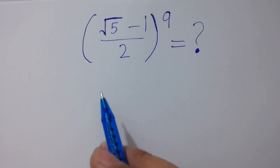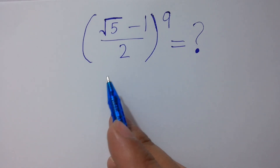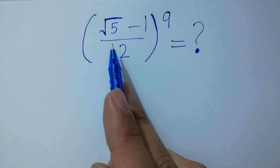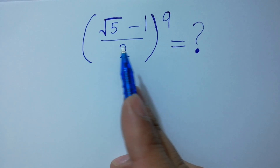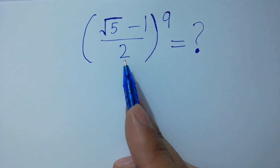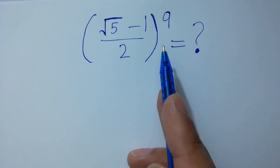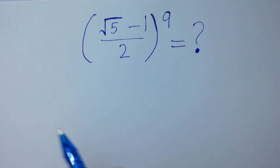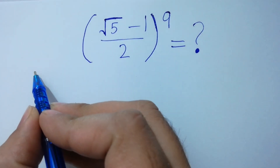Hello friends. How to simplify this: square root of 5 minus 1 over 2, to the whole power 9? Let's have a solution.